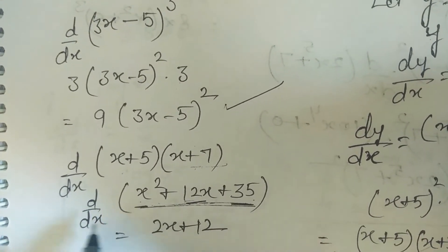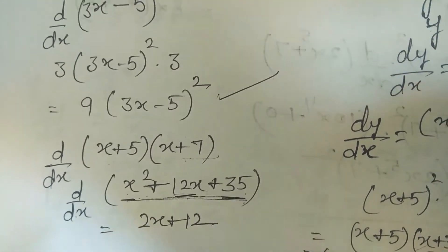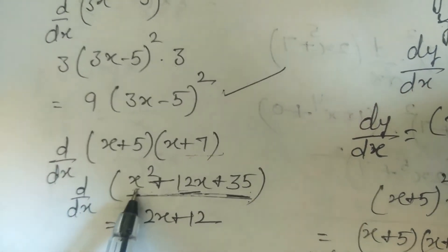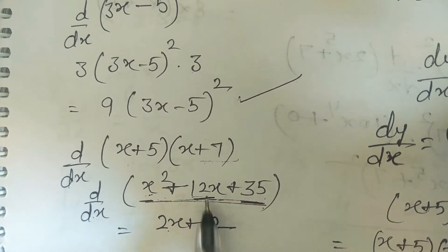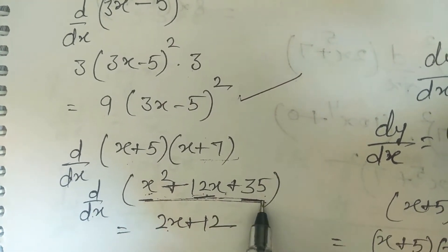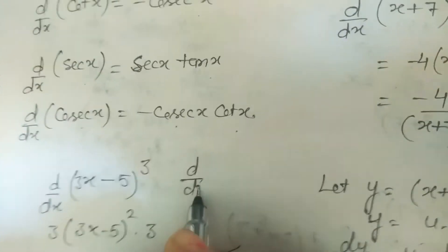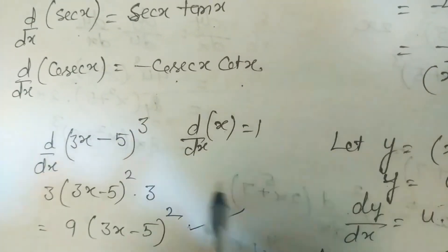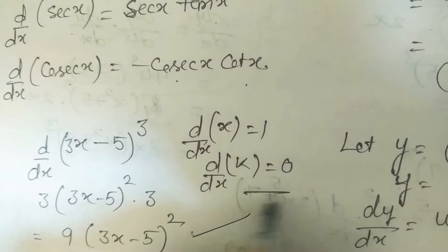After multiplication we take the derivative of each term. Derivative of x² is 2x, derivative of 12x is 12, and derivative of 35 is 0, since the derivative of any constant is 0. So the answer is 2x + 12.